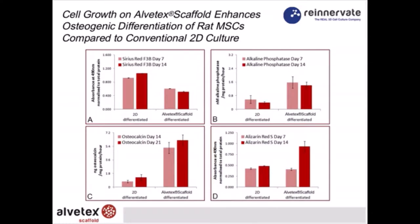Proceeding to quantification of differentiation, we're looking at four different plots — A, B, C, and D. Plot A is sirius red, used to monitor collagen formation. Plot B is alkaline phosphatase, which is known to increase during osteogenic induction. Plot C is osteocalcin, which also increases during bone differentiation. Plot D is alizarin red, a stain for calcium deposition — it can also detect other ions such as magnesium, but those are normally present at much lower levels, so we are primarily looking at calcium.